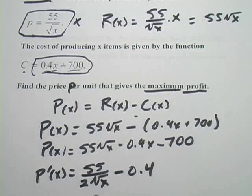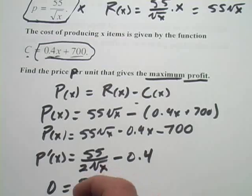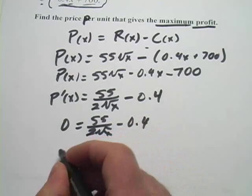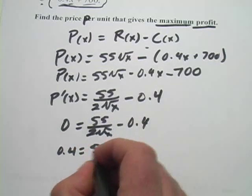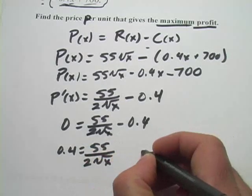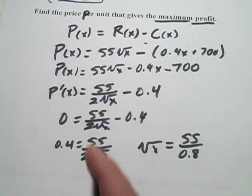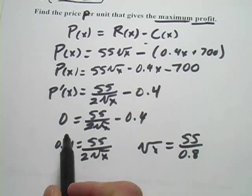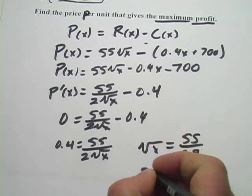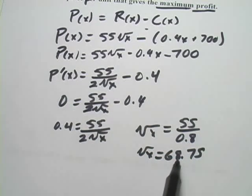And then this simply becomes 0.4 and the 700 disappears. So there is our derivative. And if we want to solve, we'll set this to 0 and solve for x. And to solve for x here, I'm going to add 0.4 to each side. And let's see, a little flipping things around here. We're going to get the square root of x equals 55 over 0.8. I just multiplied the 0.2 here and then multiplied by the square root of x and then divided by the 0.8. And let's see, we're going to get the square root of x equals 68.75. And if you want to go ahead and solve all the way for x, you just square that.